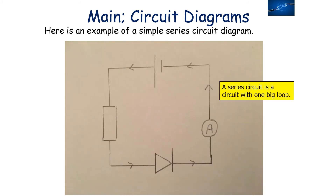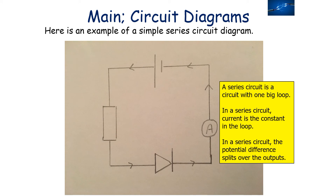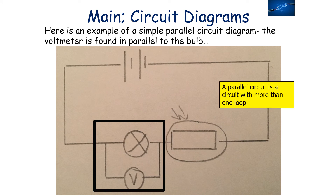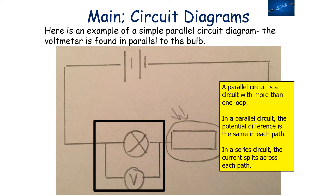Here is a drawn example of a simple series circuit diagram. A series circuit is a circuit with one big loop — the current is constant throughout the loop, but the potential difference splits over the outputs. Here is an example of a simple parallel circuit. In a parallel circuit, which has more than one loop, the potential difference is the same in each path, but the current splits across each path.